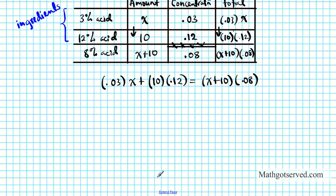If I solve this equation that will give me the amount of 3% acid I need to generate an 8% solution. Let's work this out. If we multiply here we're going to have 0.03x. If you multiply 10 by 0.12 it's going to be 1.2. Distribute 0.08 to these. So you have 0.08x and then 10 times 0.08 is plus 0.8.